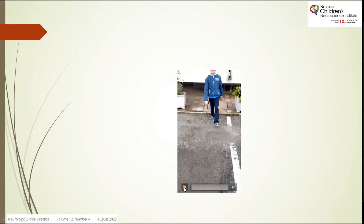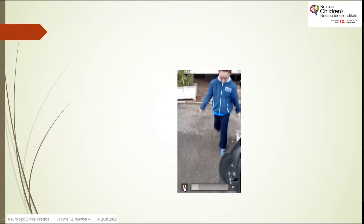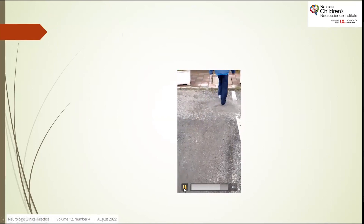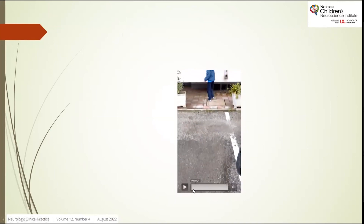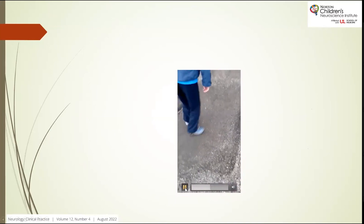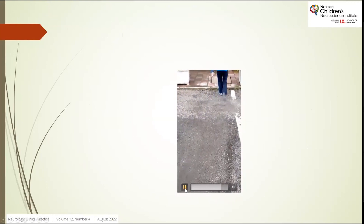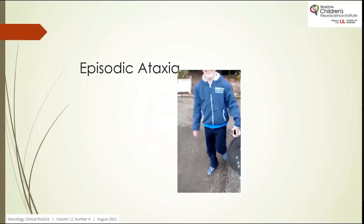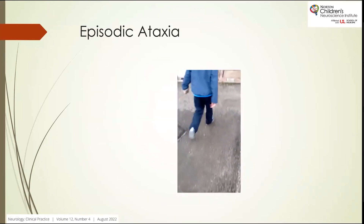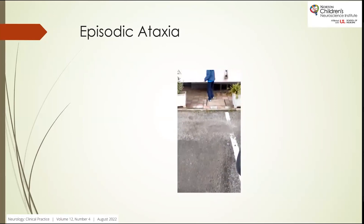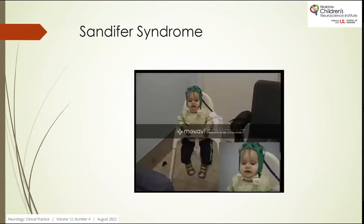This video shows another similar non-epileptic event—episodic ataxia. You can see the child's walking and imbalance. The child gets imbalanced very quickly but then continues to walk afterwards. These are called episodic ataxia, which is another type of paroxysmal non-epileptic movement disorder.